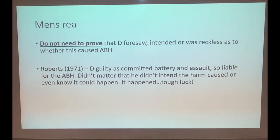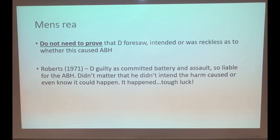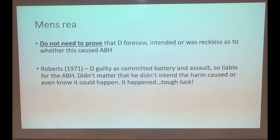For the mens rea of ABH, you do not need to prove that the defendant foresaw, intended, or was reckless as to whether their actions caused ABH. From Roberts, the defendant is guilty if he committed an assault or battery which resulted in ABH - in that case the victim threw herself out of a moving vehicle and was injured. Even though he didn't intend or foresee that level of harm, it doesn't matter. As long as they intentionally or recklessly did the assault or battery, and that resulted in ABH, that is sufficient.